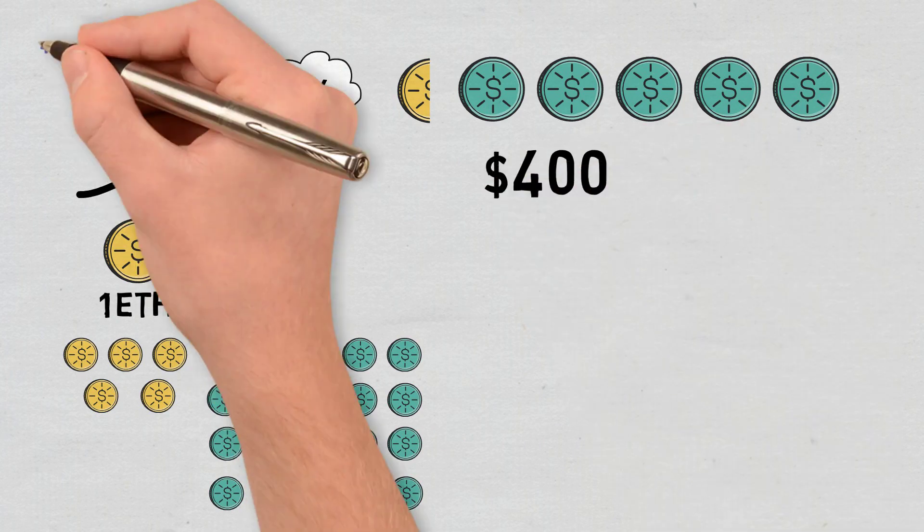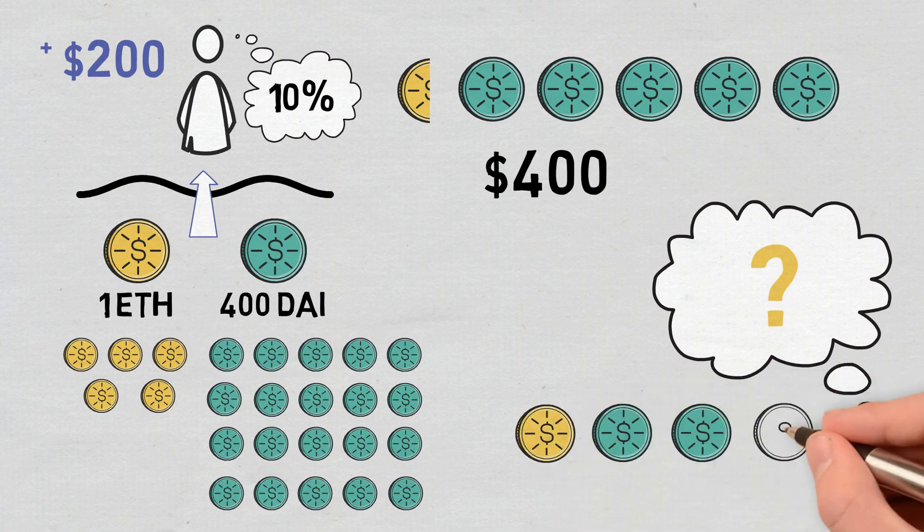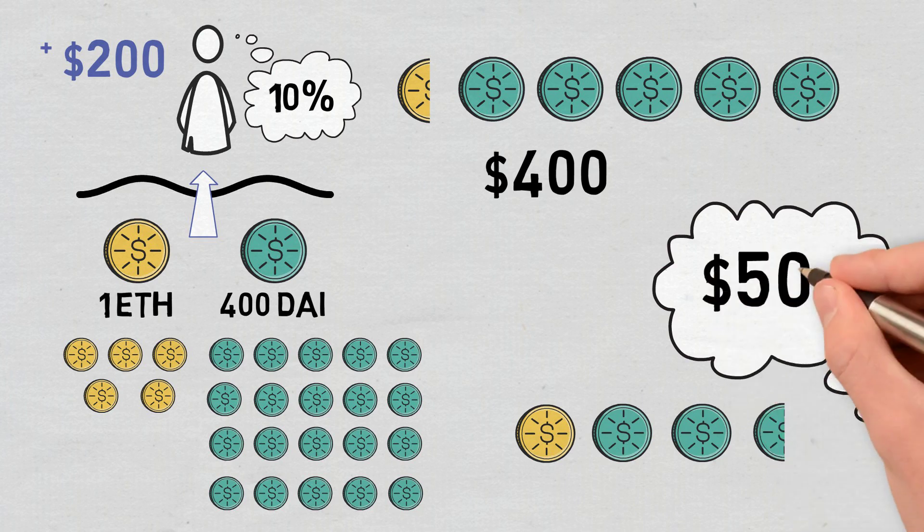Although profits of $200 resulted, the amount would have been different if they had continued to hold 1 ETH and 100 DAI. The combined dollar value of these assets would now have been $500.